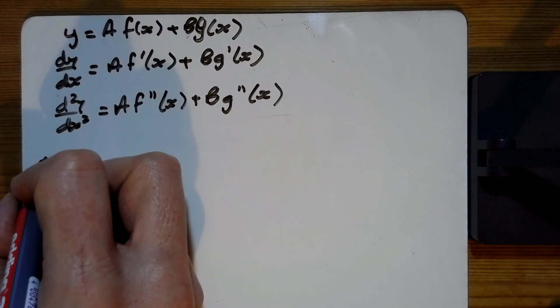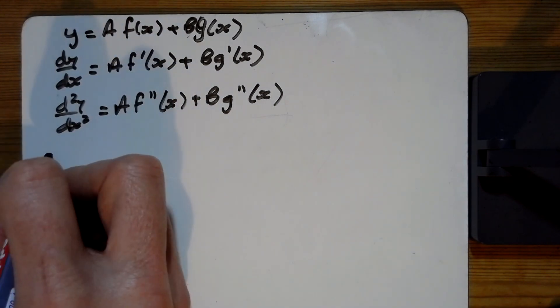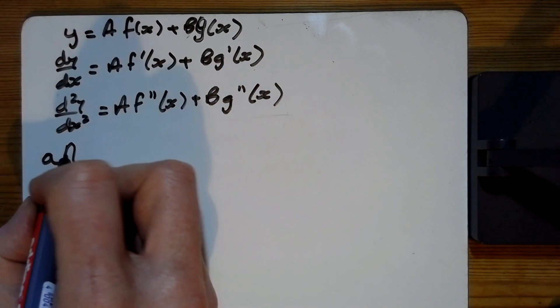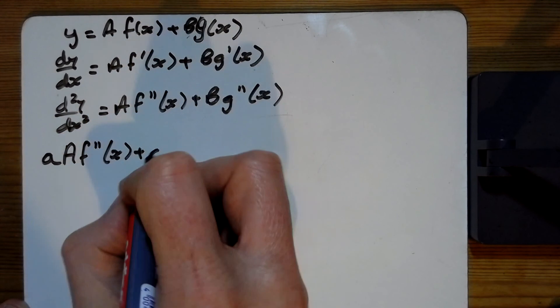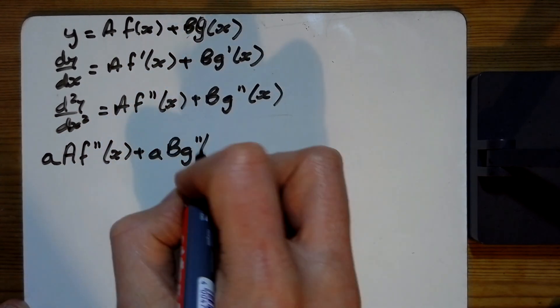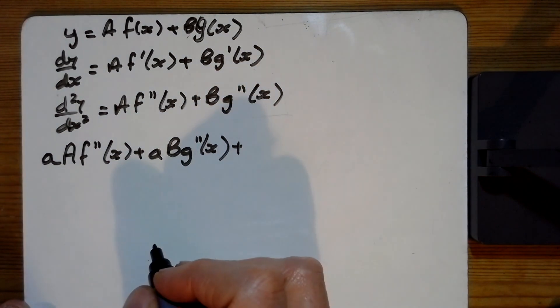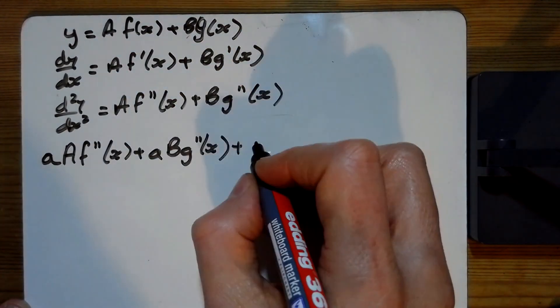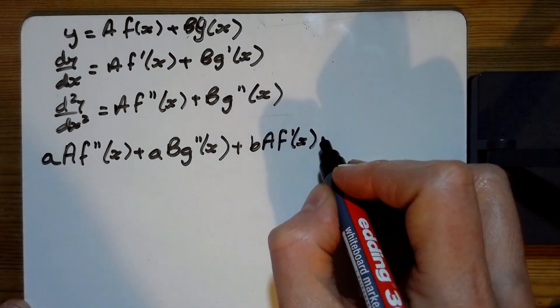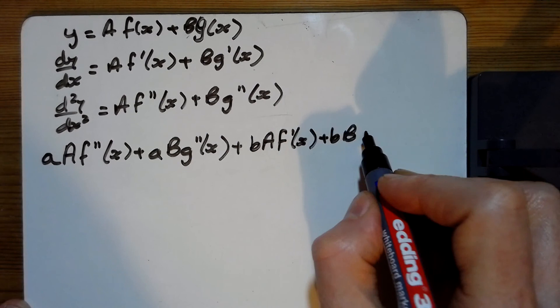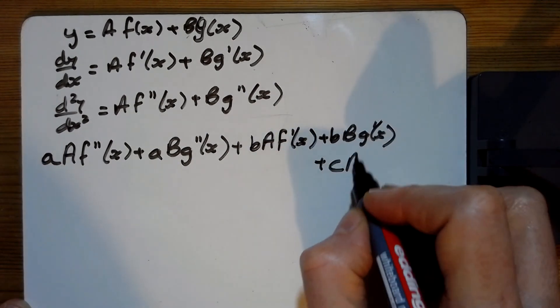Substituting that into the big long quadratic then gives us a times all of this one, so that's little a big A f double dashed of x plus little a big B g double dashed of x, plus then it's b times the single derivative, so that is little b big A f dashed of x plus little b big B g dashed of x.